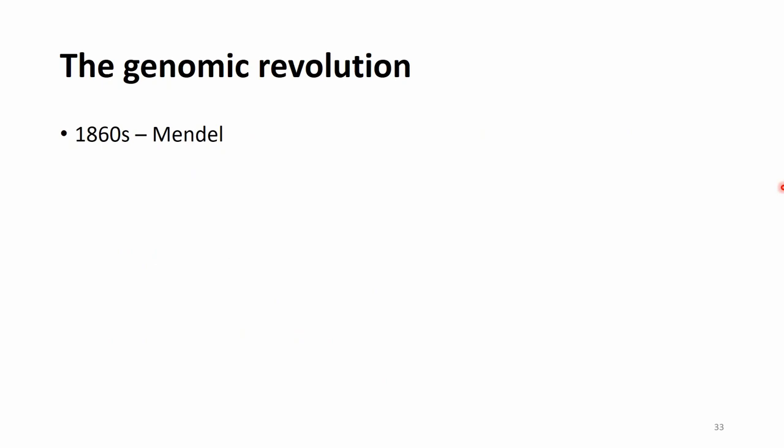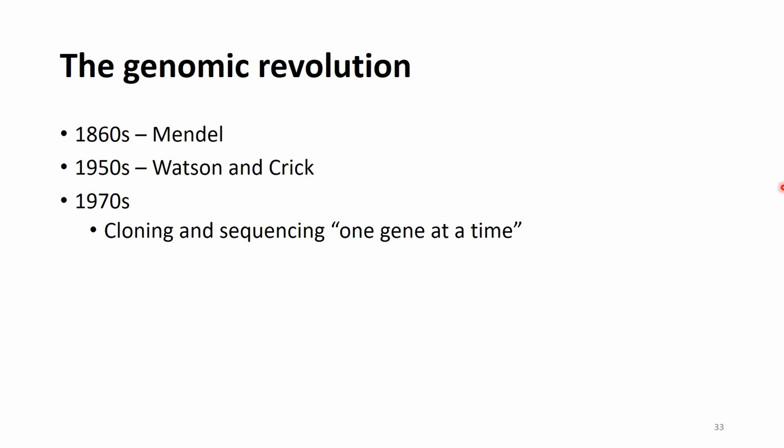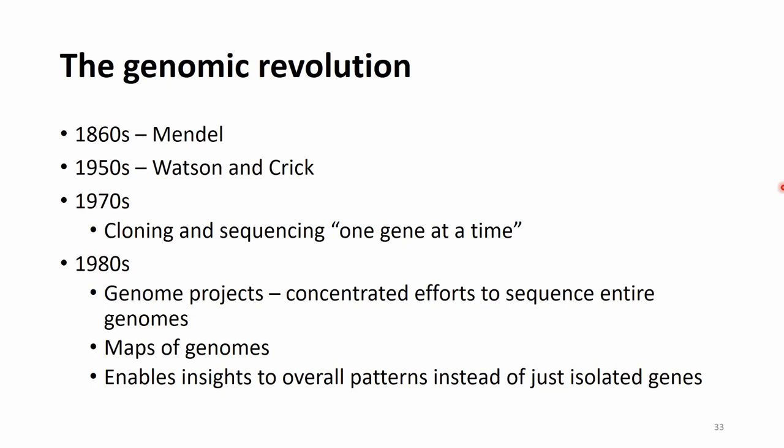A very quick recap of how we got here: in the 1860s there was Mendel and the start of genetics; in the 1950s there was Watson and Crick; in the 1970s, cloning and sequencing one genome at a time; in the 1980s, first genome projects, maps of genomes, and insights into overall patterns instead of just isolated genes. This is a very quick summary — a lot was left out.